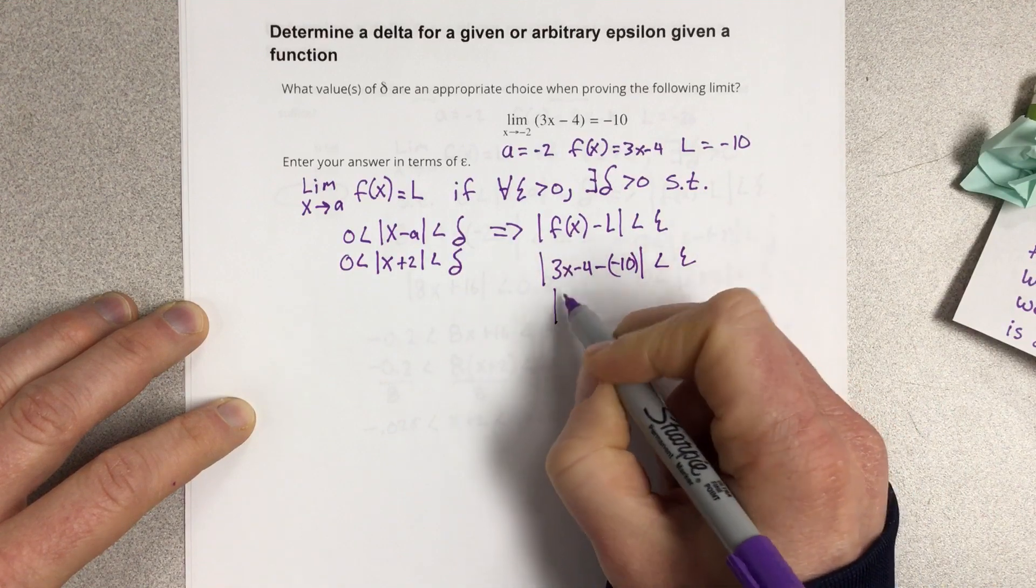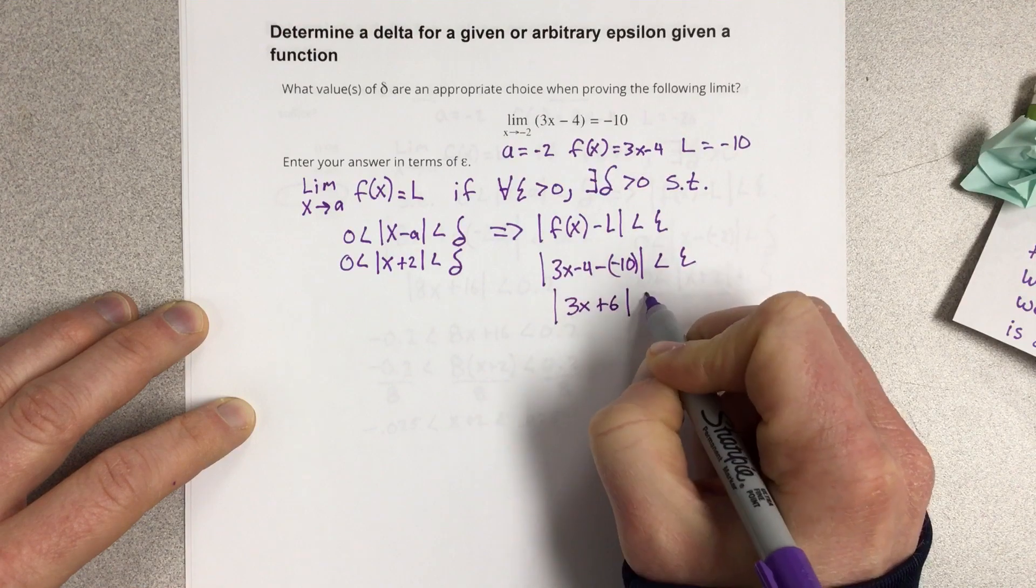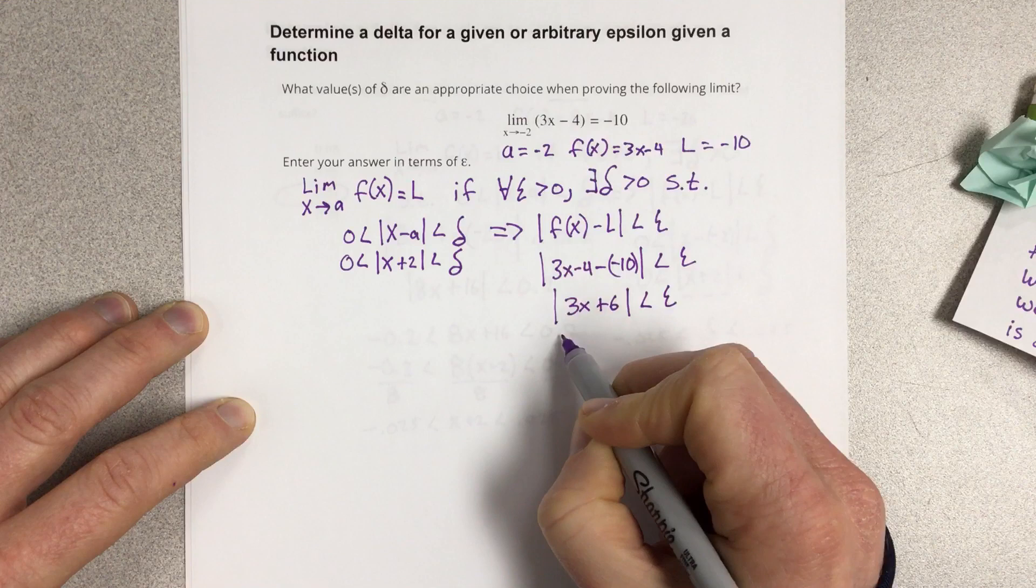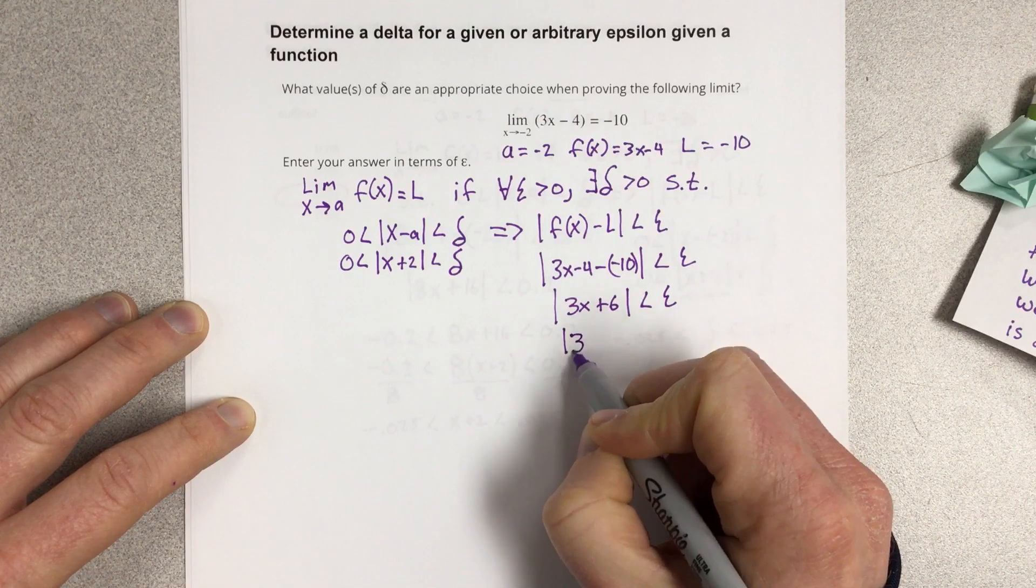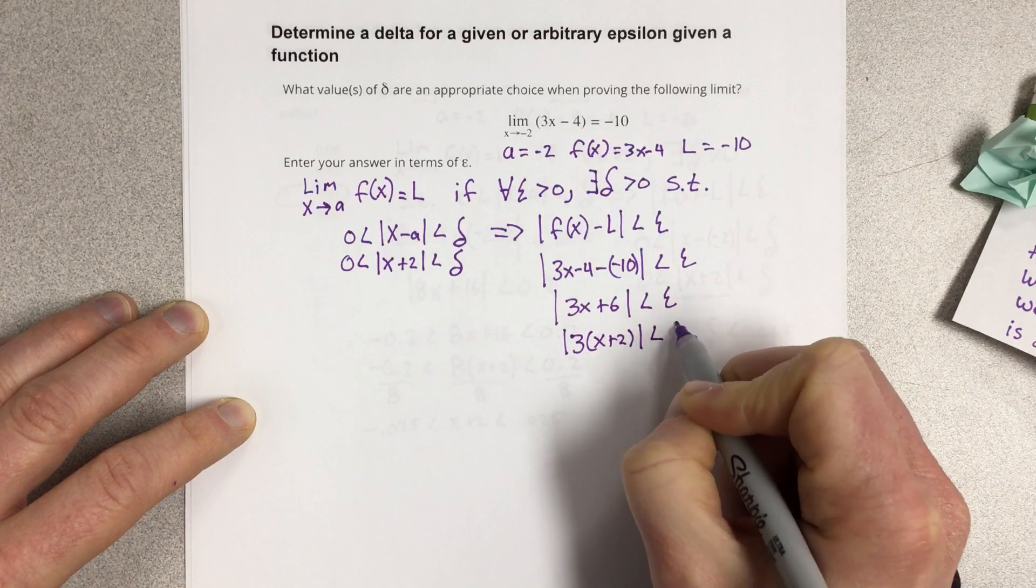So we get the absolute value of 3x plus 6 less than epsilon. I'm going to factor a 3 out here, and that'd be absolute value of 3 times x plus 2, less than epsilon.